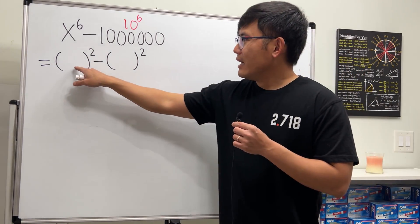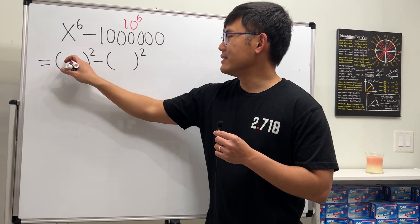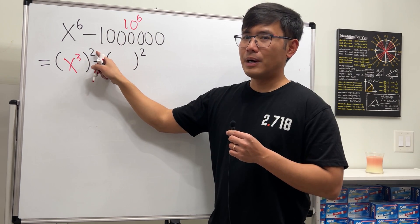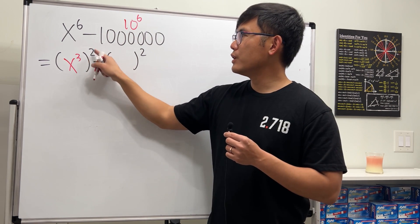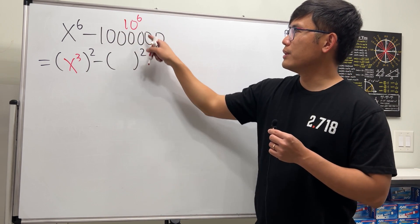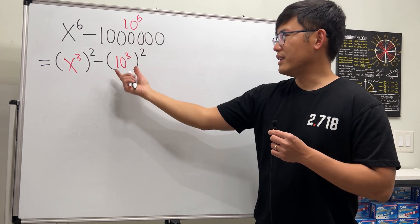Okay, what to the second power will give us x to the 6th power? Well, the answer to that is x to the 3rd power, because the 3rd power and the 2nd power, we multiply the powers, we get a 6. Same thing here, because this is 10 to the 6th power, so we can put 10 to the 3rd power, aka 1,000 here.